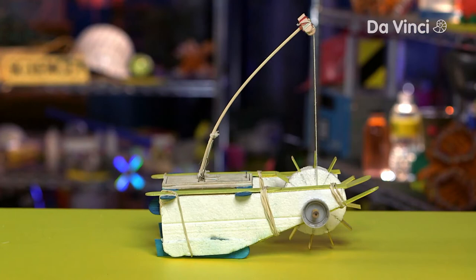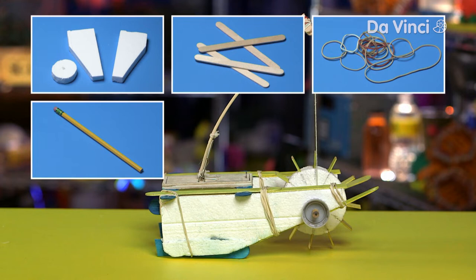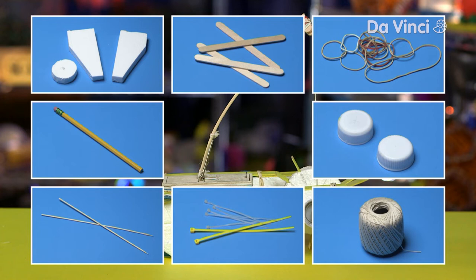My mousetrap boat is made with styrofoam, craft sticks, and elastic. You'll also want a pencil, plastic drink caps, a shish kebab skewer, small zip ties, string, and of course your mousetrap. Mousetraps can hurt your fingers, so get an adult to help you when you use them.